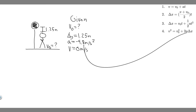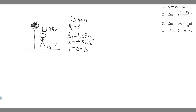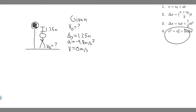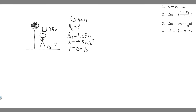We have three kinematic variables: delta-y, acceleration, and final velocity — solving for v-sub-zero. Looking at the kinematic equations, equations one through three all contain t, and we don't know the time, so we can't use those. We'll use the fourth equation because it contains v, v-sub-zero, a, and delta-y — exactly the variables we have.